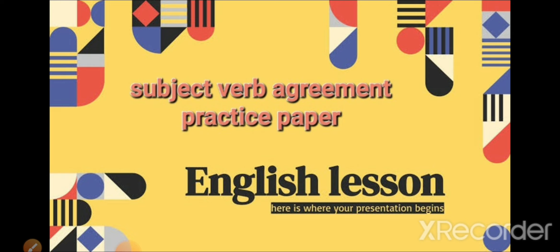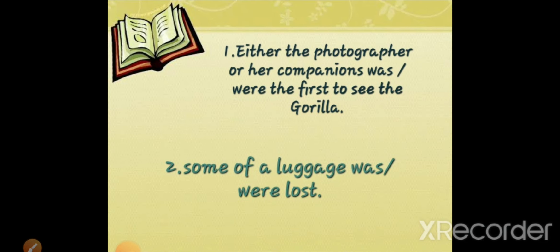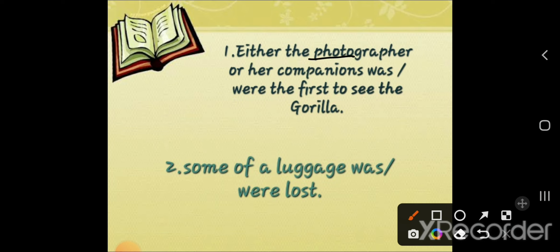First question: Either the photographer or her companions was or were the first to see the gorilla. In this question we have two options. We have the rule that when either-or or neither-nor is used, the verb agrees with the second subject.